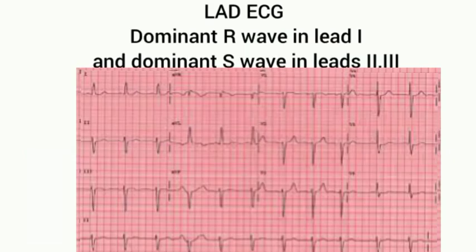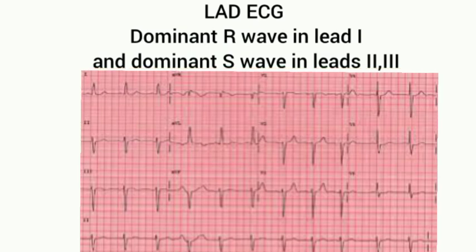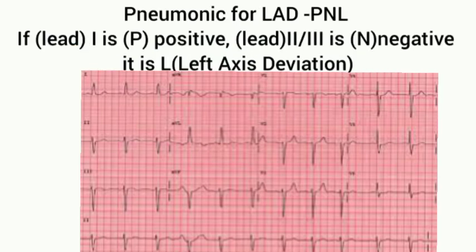You can see here the dominant R wave in lead 1, and there is dominant S wave in lead 2 and lead 3. You can remember the mnemonic for LAD: P and L. If lead 1 is positive and leads 2 and 3 are negative, then L stands for left axis deviation — P and L.